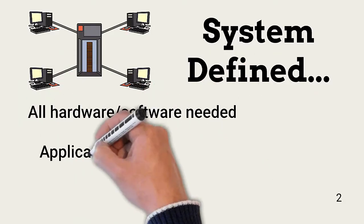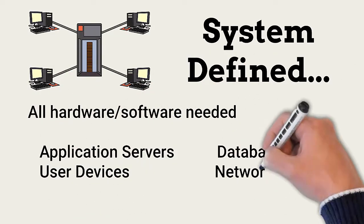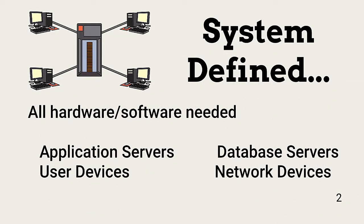Before getting started, let's define two terms. First, a system is a complete set of resources needed to manage one or more business functions. These resources include applications, application and database servers, user devices, and network devices and protocols.